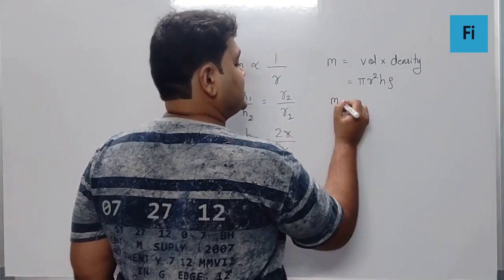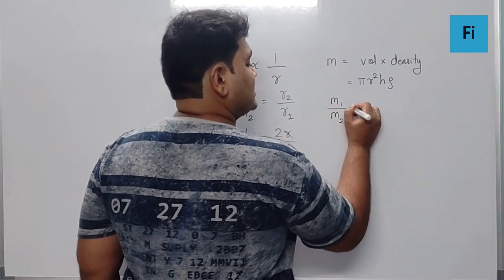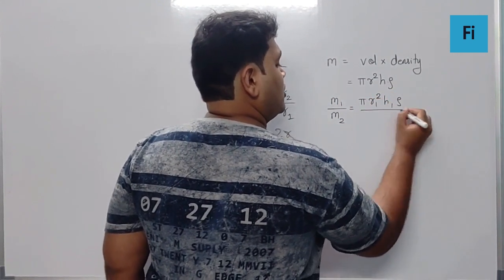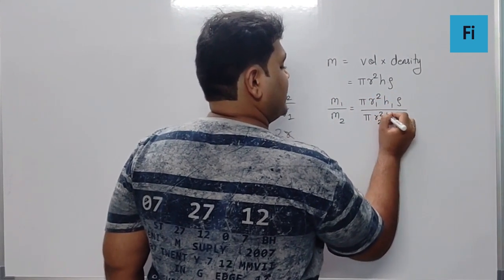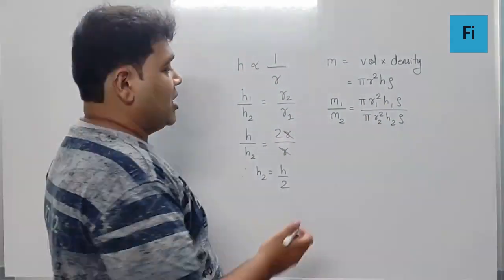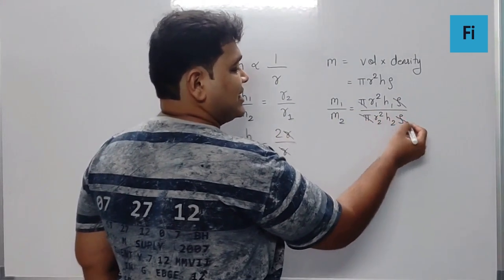So definitely we can say the mass in the first case upon the mass in the second case is πr₁²h₁ρ upon πr₂²h₂ρ. Definitely the density is going to remain the same for water. So π and ρ get cancelled.